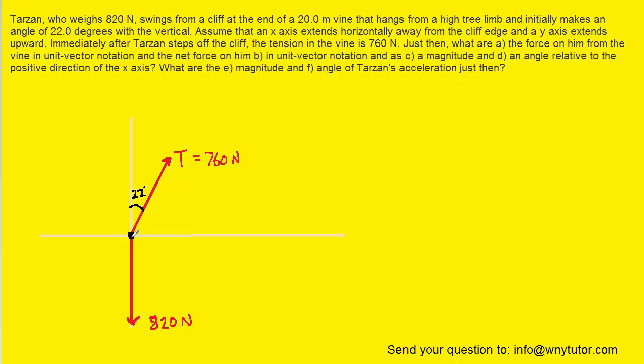There are two forces acting on Tarzan. There is his weight force which is pulling him downward. And then there's the tension force in the vine which is pointing in this direction. Notice the question said that this tension force makes an angle of 22 degrees with the vertical.